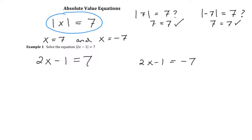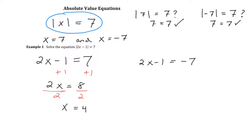Now that the absolute value symbol is gone, we're left with two linear equations that are simple to solve. For the equation 2X minus 1 equals 7, I add 1 to both sides to get 2X equals 8, then divide by 2 to get X equals 4. This is easy to check: 2 times 4 is 8, 8 minus 1 is 7, and the absolute value of 7 is 7.